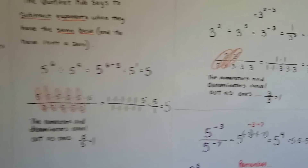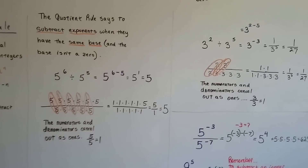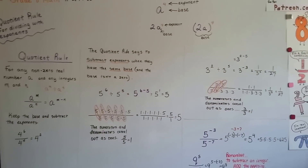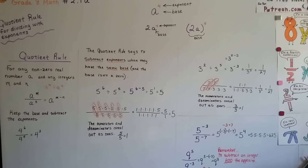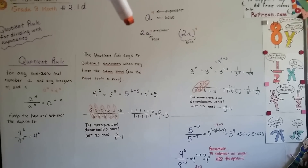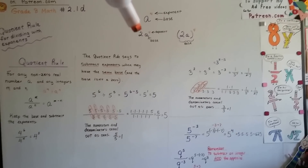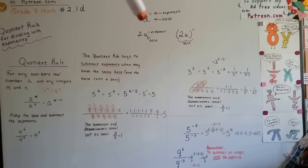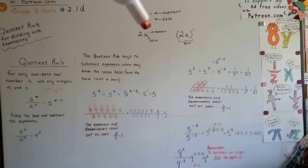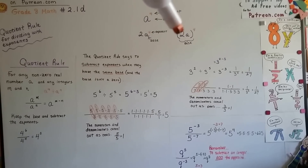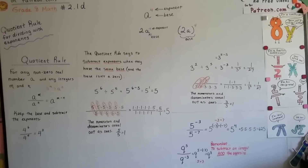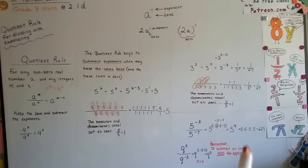So that's the quotient rule: that's why we subtract the exponents and that's what's happening. Remember what your bases are when you see a coefficient like a 2 in front of a variable — it's the variable that's the base. When they're in parentheses, the whole thing is the base. And remember to add the opposite.